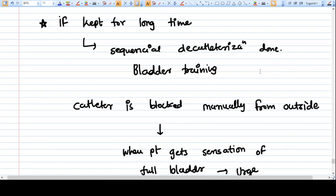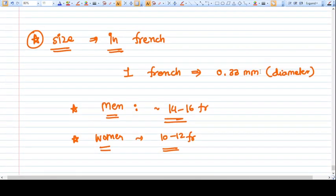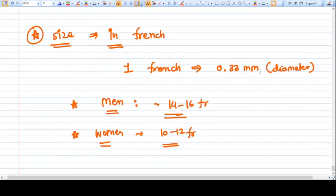Now let's talk about the size of the catheter. It's very confusing most of the time because the size is generally in French. One French means 0.33 mm - that's the diameter of the catheter lumen. In the case of men, 14 to 16 French size catheters are used, and in women, 10 to 12 French size catheters are used.